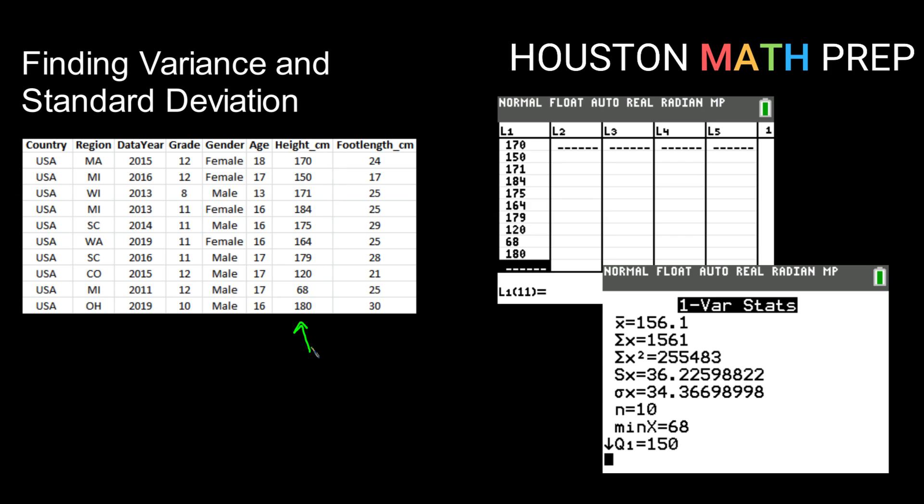The first thing I had to do in my calculator was go into my lists and type in my height data exactly as it appeared. I then ran my one variable stats. You might remember that from when we looked at finding measures of center using technology. So it's the same screen.